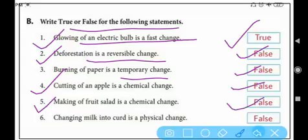Number six: changing milk into curd is a physical change — this is false. When curd is formed from milk, a new substance with different properties is formed, which means it is a chemical change. So this statement is false.